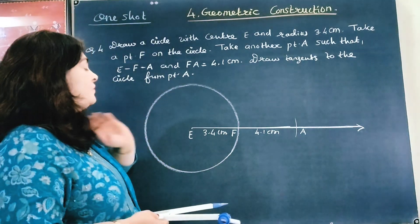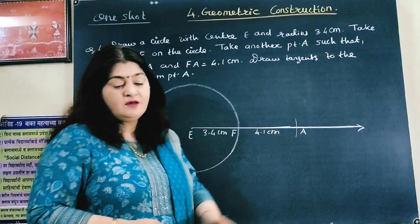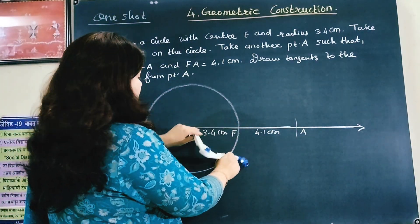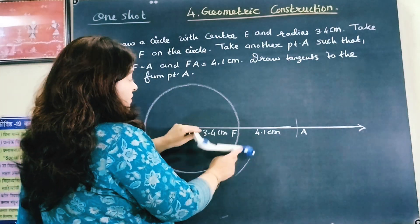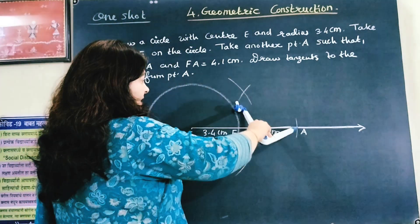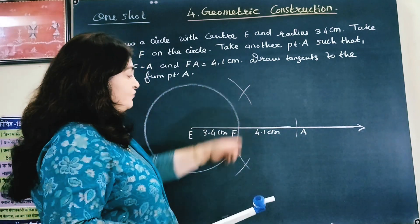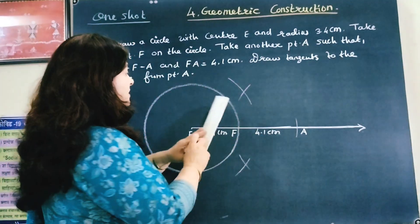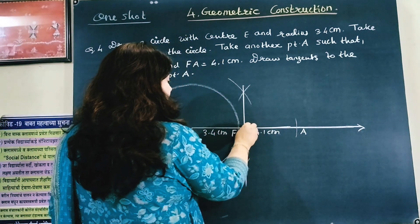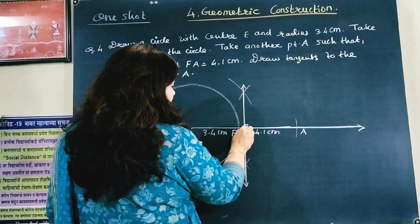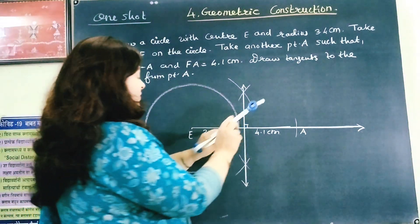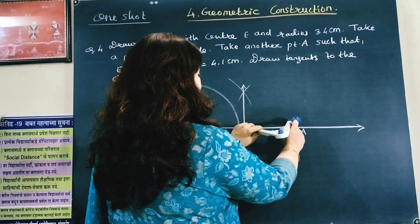Now we have to draw the perpendicular bisector of segment EA. Put compass at E, draw one arc at bottom and top. Put compass at A and draw intersecting arcs. From these two intersecting arcs, draw a line which will be perpendicular to EA. Now take the radius at this intersection point and draw a circle passing through A.